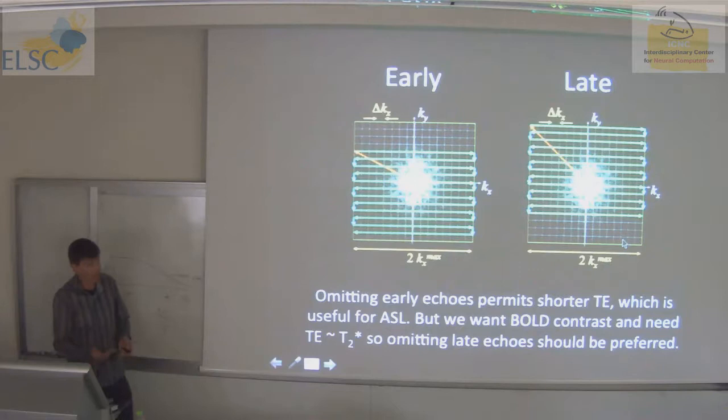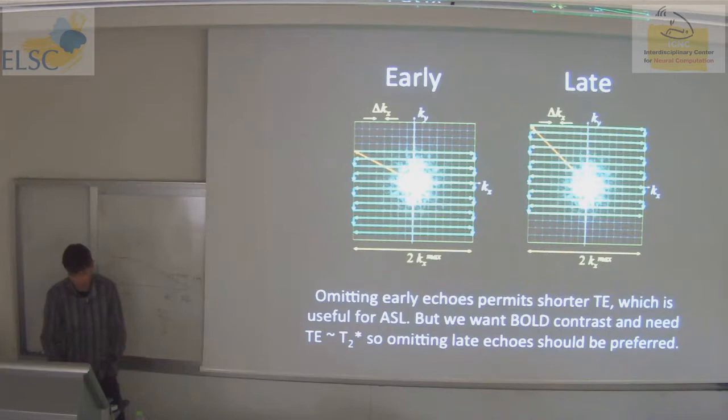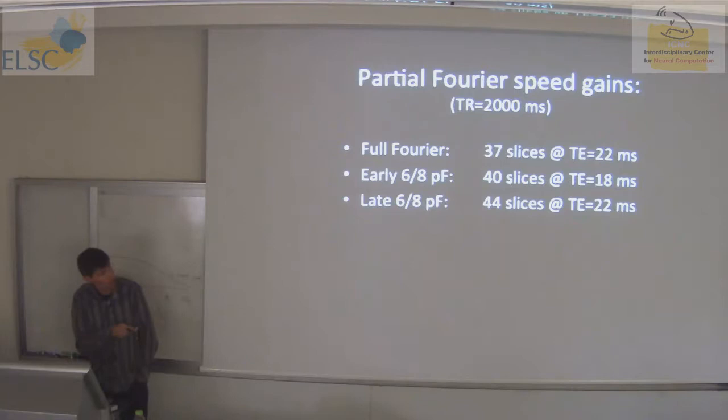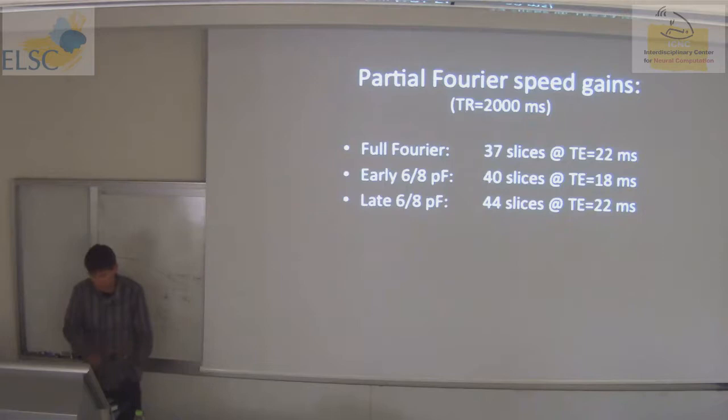Omitting the late echoes makes a lot of sense because as soon as I've finished with the current slice, I can move on to the next slice. The performance: with full Fourier standard EPI I can get about 37 slices at an echo time of 22ms. If I push the early echoes off, I get about 40 slices. But if I omit only the late echoes, I can get 44 slices — that's roughly a 20% gain. Not bad.